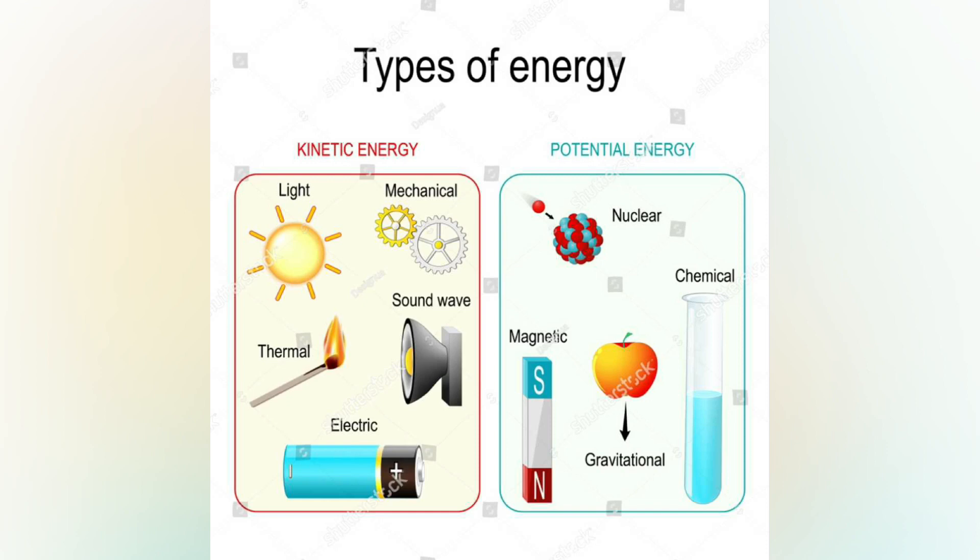Chemical energy of chemical substances can be transformed to other forms of energy by a chemical reaction. For example, when a fuel is burned, the chemical energy is converted to heat. Green plants transform solar energy to chemical energy through the process of photosynthesis.